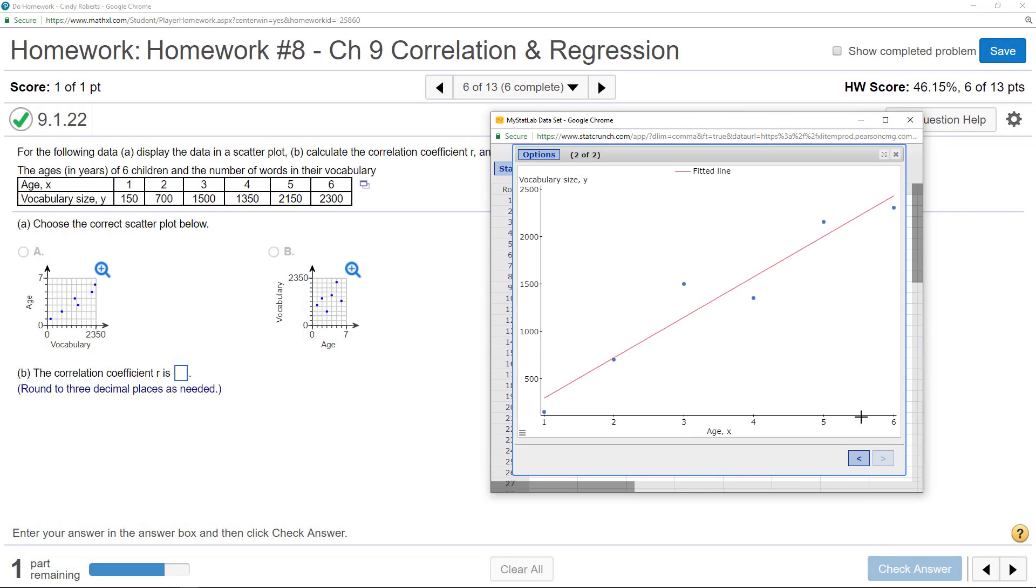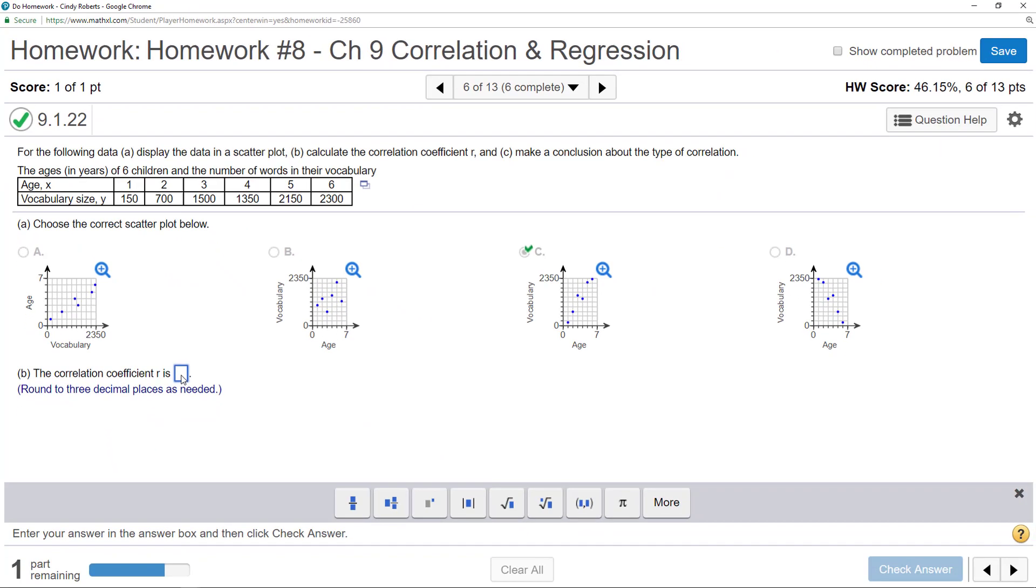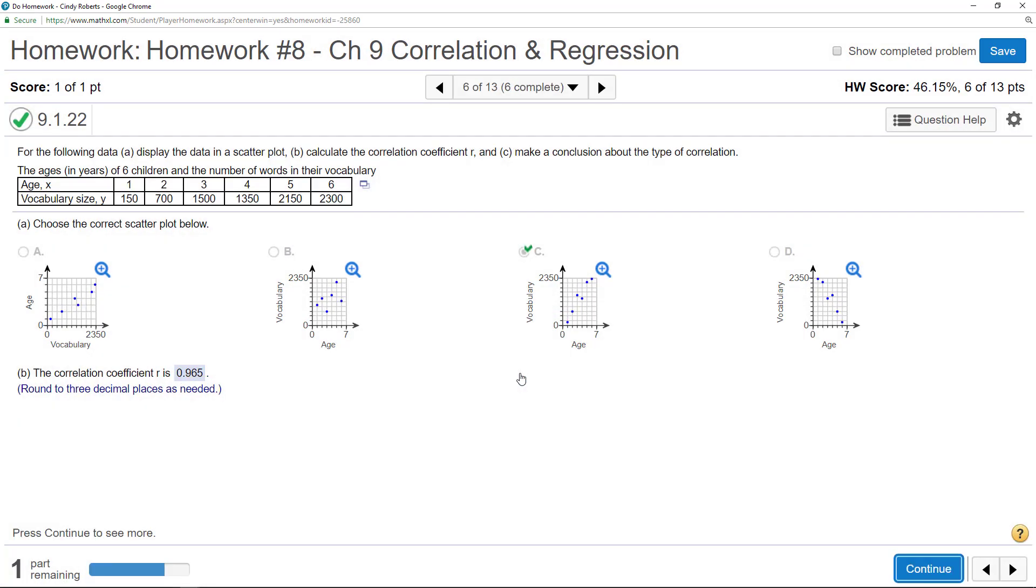So it asked me for my correlation coefficient. I just go back here, and right there, my correlation coefficient is 0.965, rounded to 0.965.